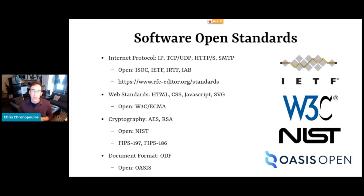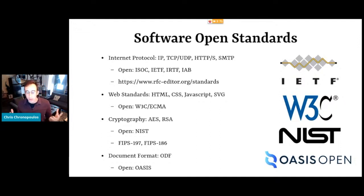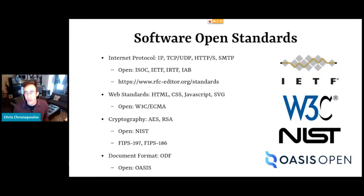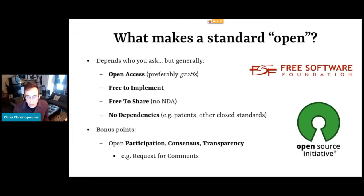Web standards kind of fall into the same category: HTML, CSS, JavaScript. A lot of these are maintained by the World Wide Web Consortium and ECMA for JavaScript. I don't think it's any exaggeration to say that the internet would not have developed as rapidly or successfully as it did, had these crucial standards been proprietary trade secrets or something. In a similar vein, there's cryptographic protocols — AES and RSA — which need to be implemented according to some specification in order to be considered secure. NIST, the National Institute of Standards and Technology, maintains standards for those. And then there's document formats — ODF, the Open Document Format, which is maintained by OASIS. So much of the software that the open web depends on, I would say, depends on open standards. There's strong precedent for this kind of thought in our work.